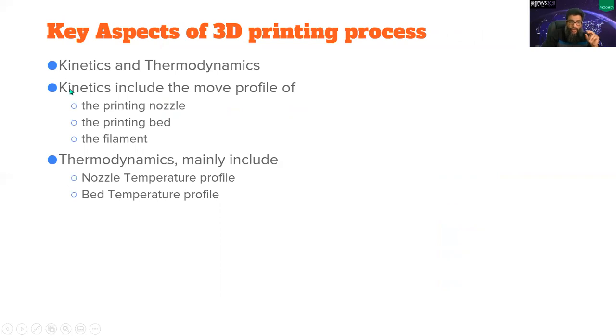So what all is included in kinetics, there are like four different axis of movement, like X axis, Y axis, Z axis and the filament axis. So we deployed four different sensors for this, for thermodynamics, the nozzle temperature and the bed temperature. So there are like six different sensors that we deployed in our case study.